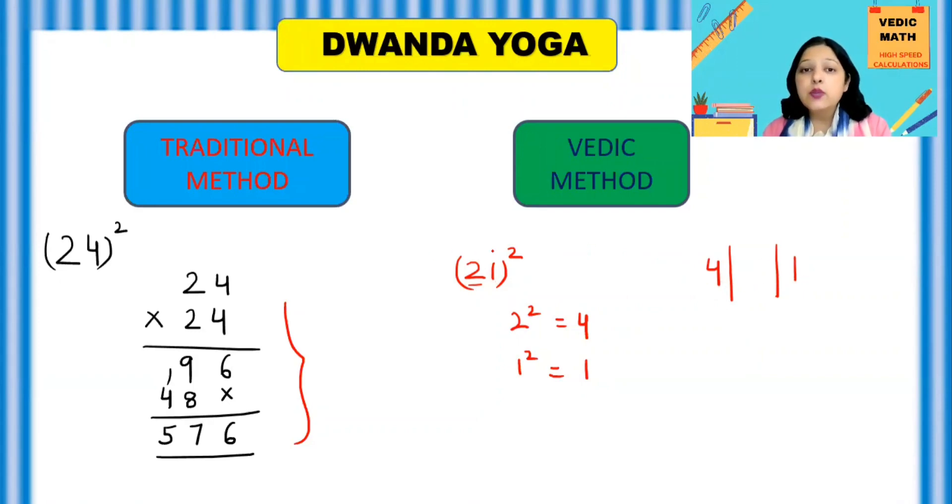Now in the middle, you multiply these 2, 2 times 1 is 2 and then multiply this product with 2 again. So 2 times 1, 2, 2 into 2 is 4. So the answer will be 441. So 441 is a square of 21.